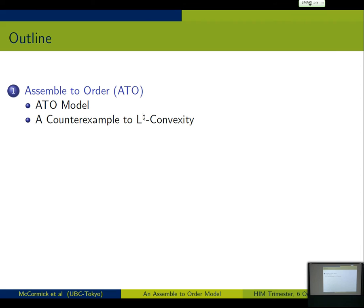So here's the outline. I'm going to tell you about this supply chain model, so-called assemble to order ATO model, and it's going to lead into showing that it's actually not L-natural convex, which is a bummer. I'm going to present you a negative result. So to somewhat make up for it, I'm going to show you how to get an algorithm anyway, which is going to be fairly similar to what Akiyoshi just showed you, and then I'll have some conclusions.